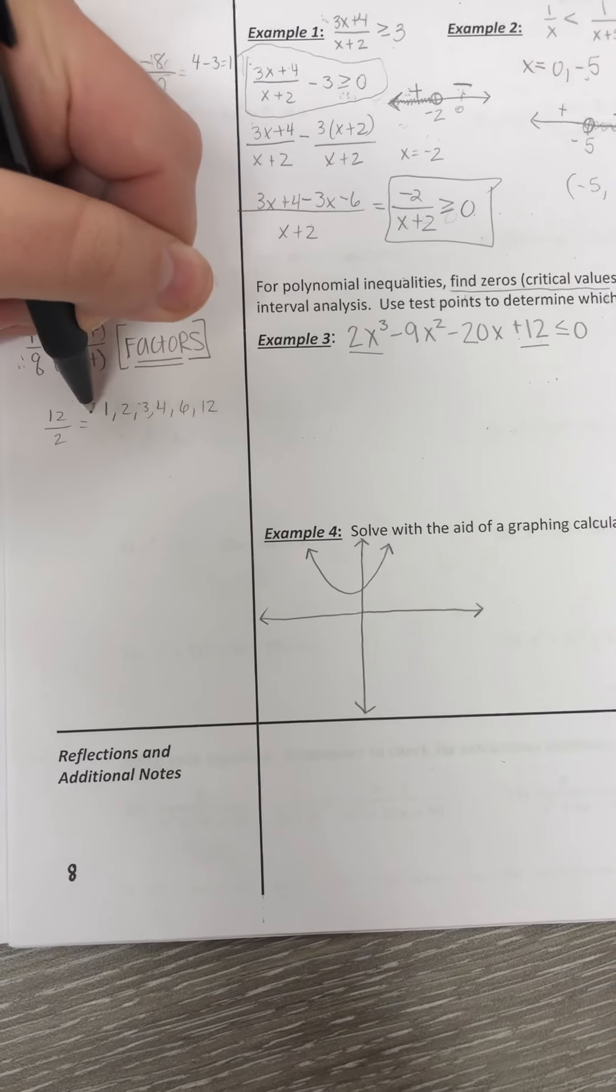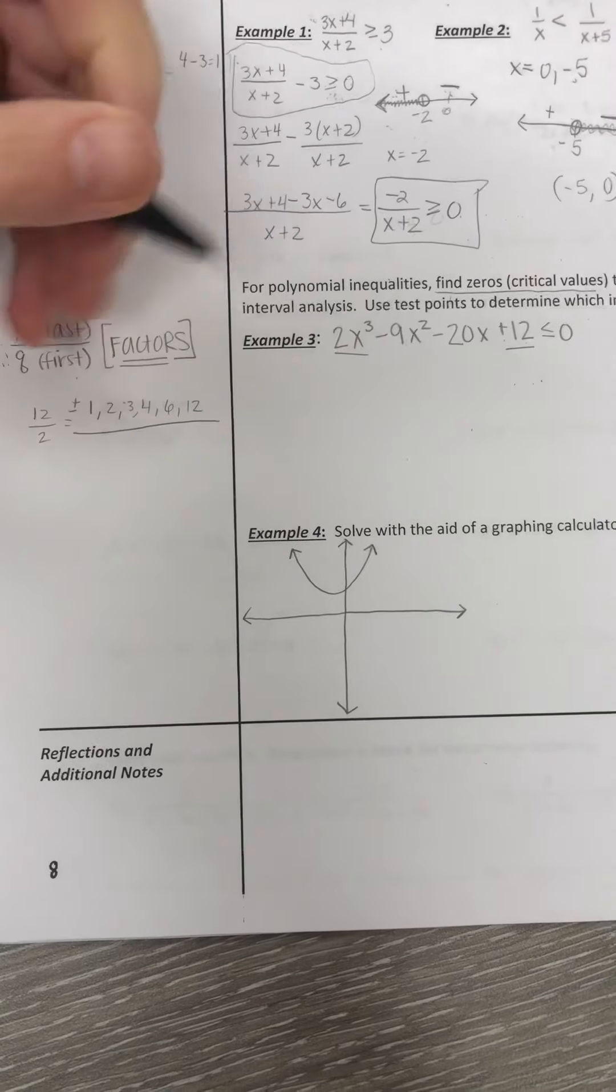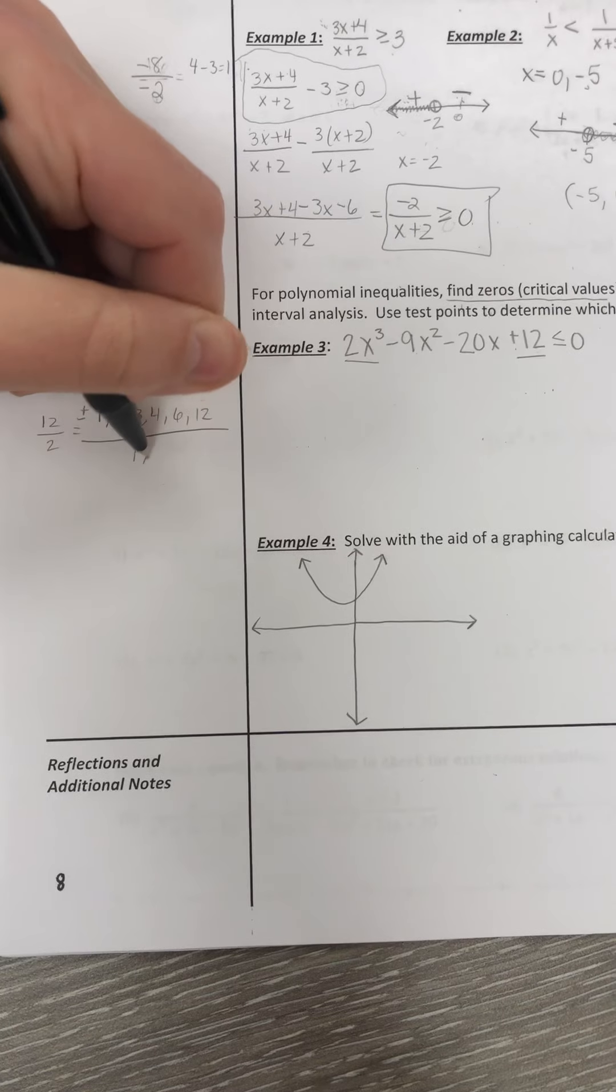Alright, and these could be positive or negative. Always positive or negative. And the bottom, we have 1 or 2.